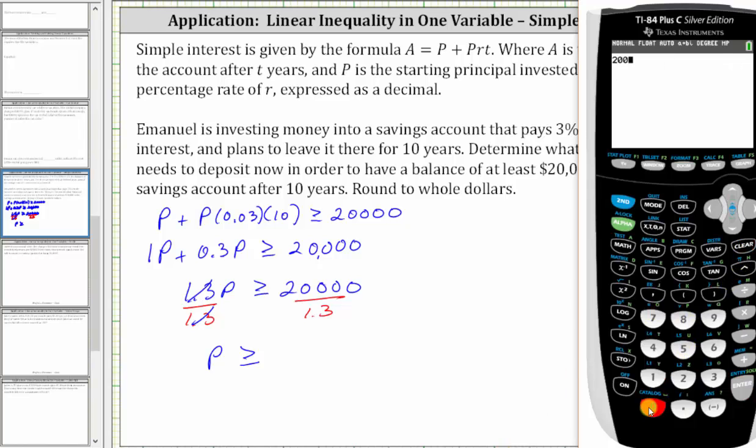20,000 divided by 1.3, enter. We're told to round to whole dollars, and therefore we round up to $15,385.